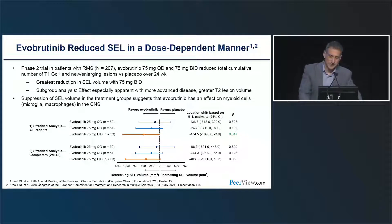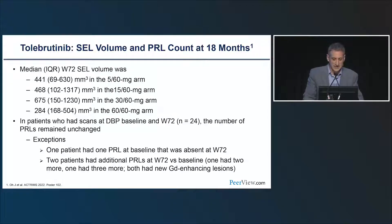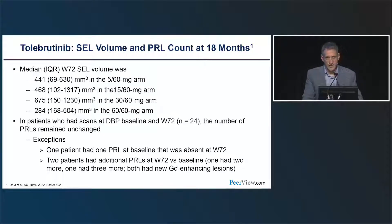The tolebrutinib data presented at this meeting showed numbers for the volume of slowly expanding lesions across dosage arms, ultimately at 60 mg. Regarding paramagnetic rim lesions identifying chronic active non-resolving white matter inflammation, lesions were generally stable over time in this population. One patient had a paramagnetic rim lesion disappear by week 72; two patients had new paramagnetic rim lesions—patients who were active on trial, consistent with the known formation of chronic active lesions in the wake of new gadolinium-enhancing lesions.